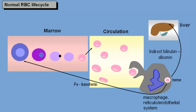is brought to the liver where it is conjugated to a water-soluble form, known as direct bilirubin. It is excreted into the bile.